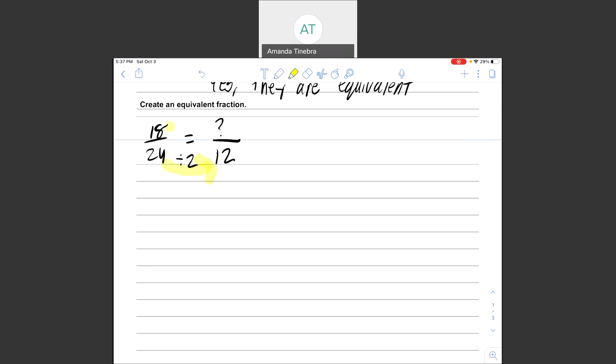That means that to get from 18 to whatever this is, I need to also divide by 2, because as long as I'm doing the same thing on both the top and the bottom, my fractions will stay equivalent. Well, 18 divided by 2 gives me 9. That means that if my question mark equals 9, I'm saying 18 over 24 equals 9 over 12. I know this is true because 18 divided by 2 is 9, 24 divided by 2 is 12. So my answer is that my missing value is 9.